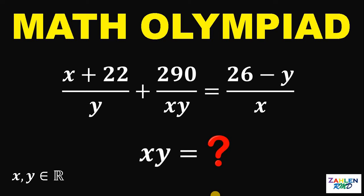Let x and y be real numbers such that x plus 22 over y plus 290 over xy equals 26 minus y over x. The question is, what is the value of x times y?